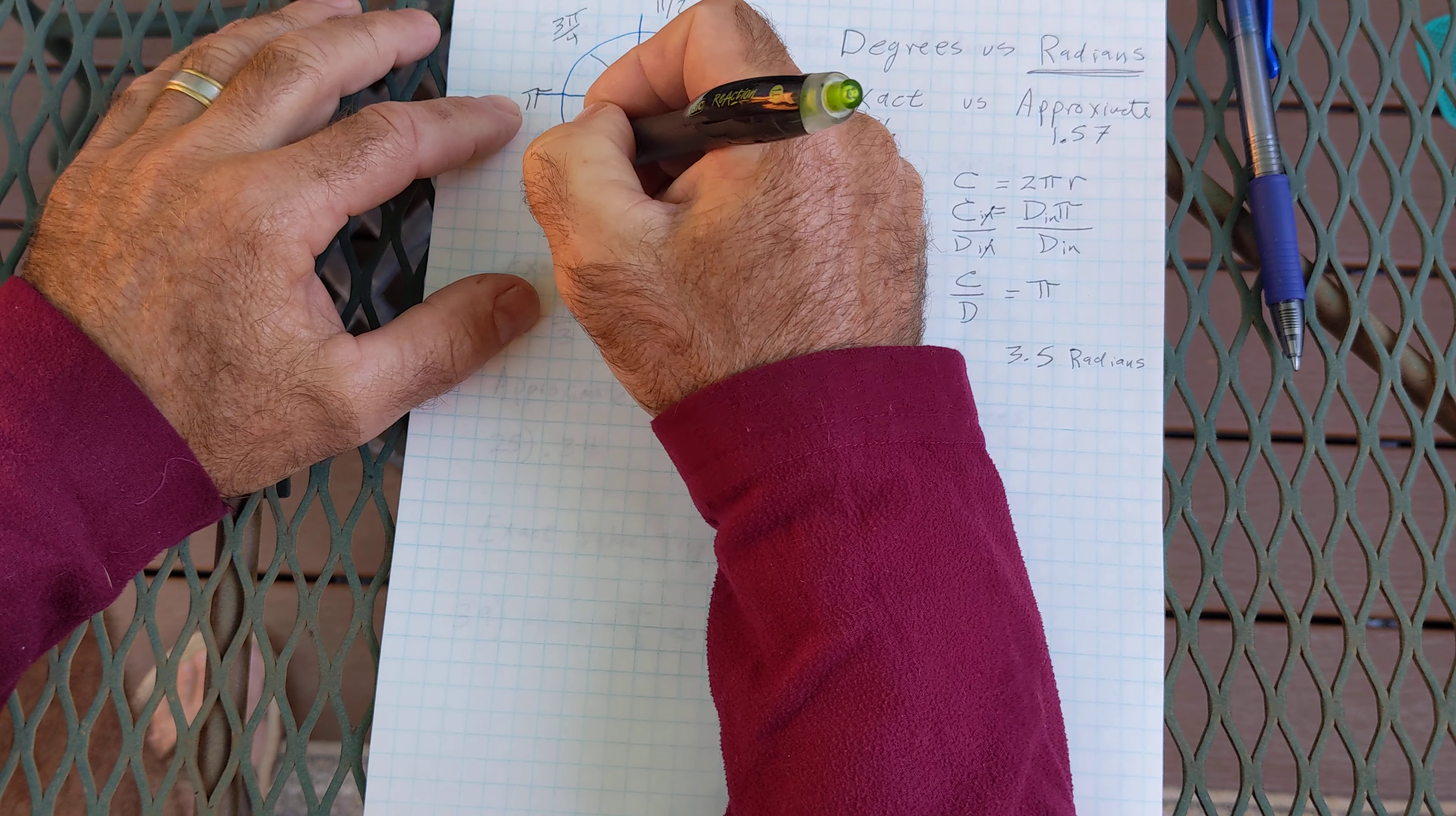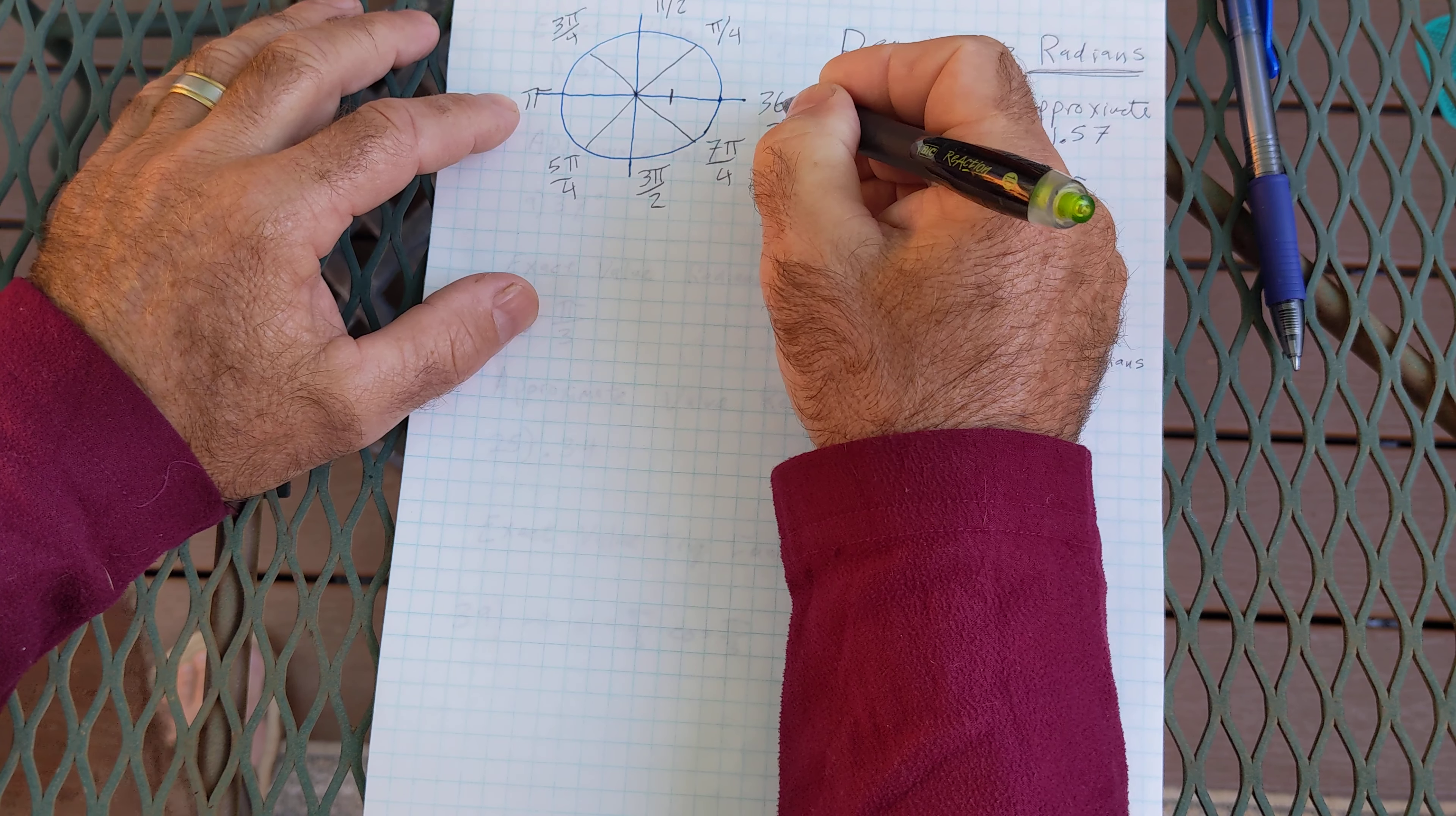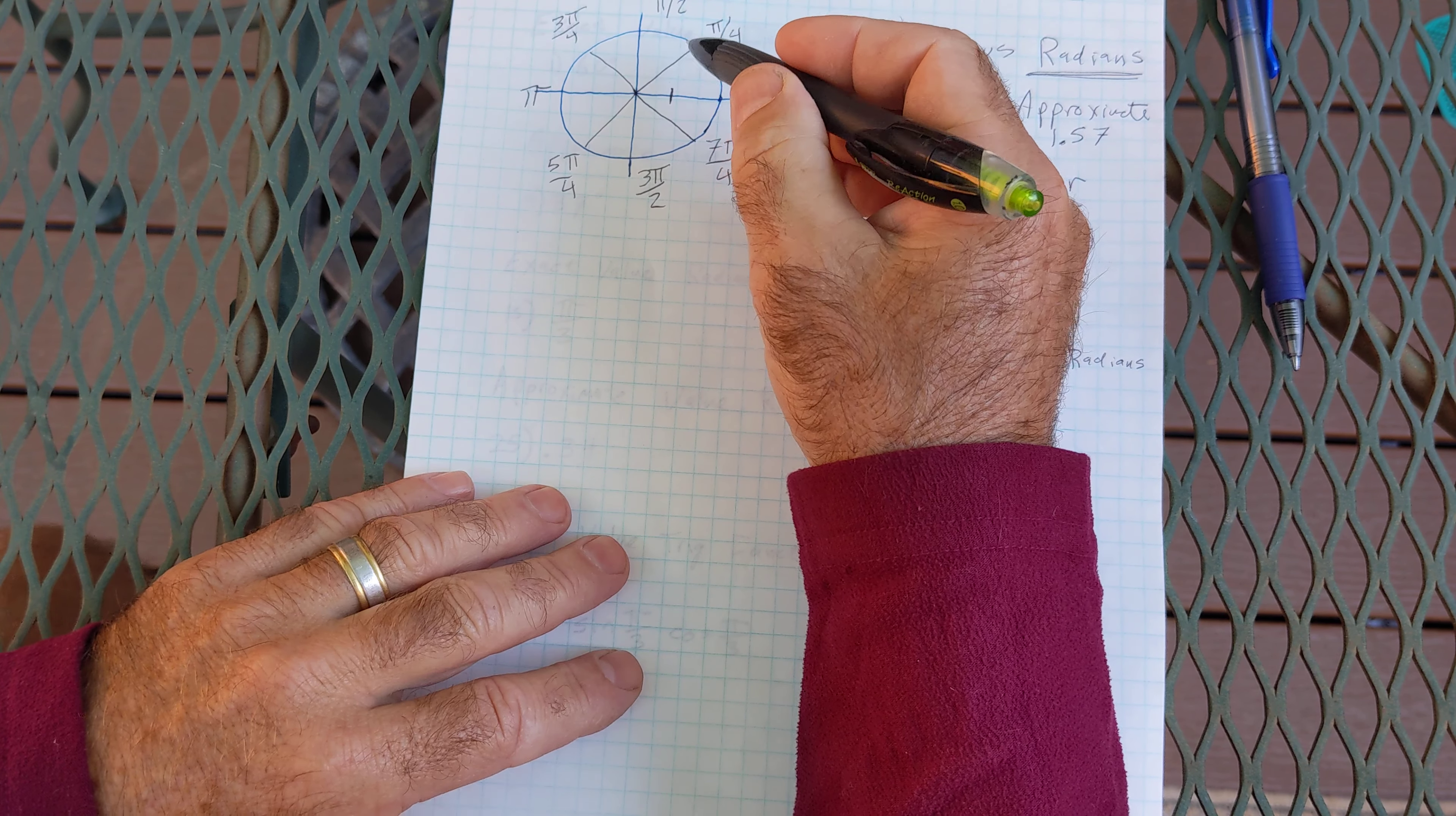6 quarters, 7 quarters, and then back to 8 quarters. So all the way around is 2 pi in radians and then I could split it into quarters or 8ths or halves.